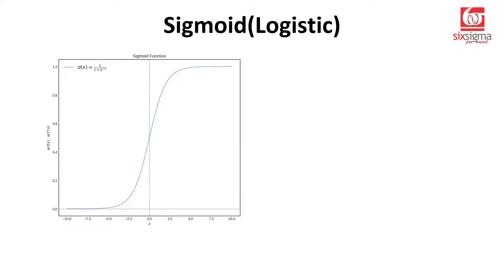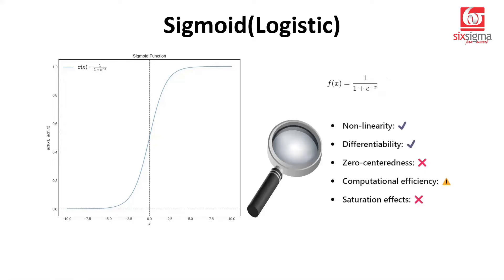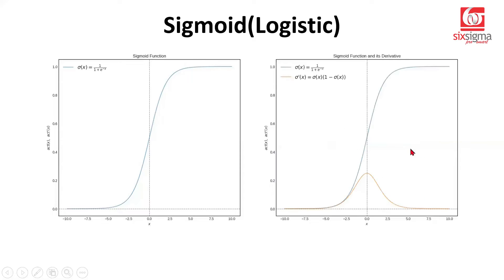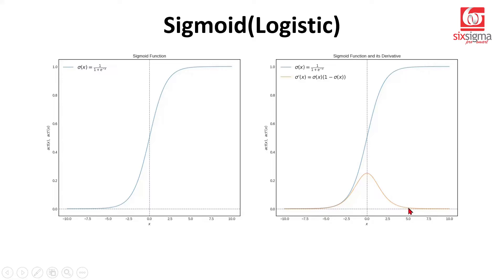Now let's move to another popular activation function known as the sigmoid. Sigmoid is a family of functions; within sigmoid, this is the logistic function in particular. The definition of a logistic function is 1 over 1 plus e raised to the power negative x. Is this nonlinear? Of course — no doubt, this is not linear at all. Differentiability: the derivative of sigmoid looks like a symmetrical shape that goes to zero beyond a point as you move away from zero in either direction. It does attain a maximum value of 0.25. So compared to a step function, the derivative of a sigmoid attains some values — it becomes zero beyond certain points, but it is differentiable.